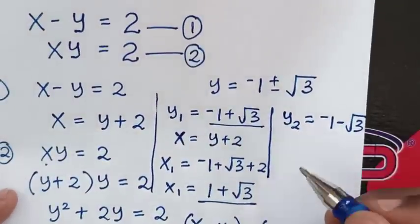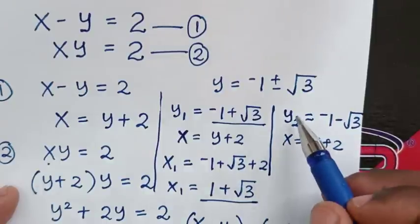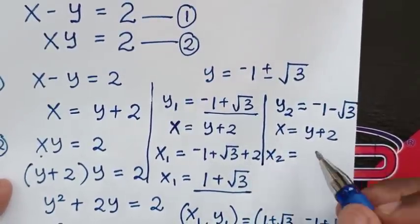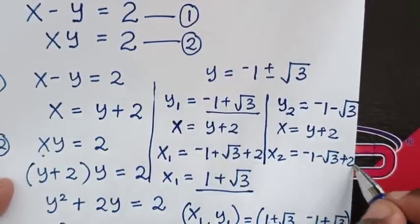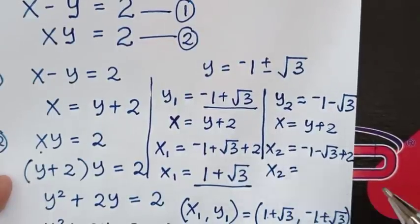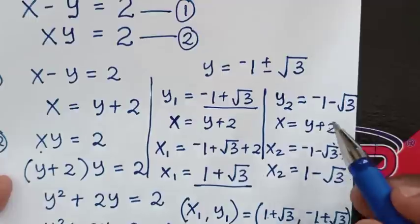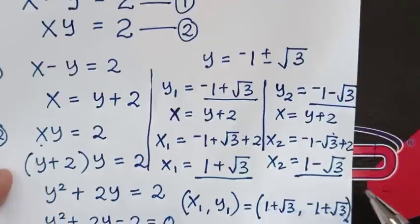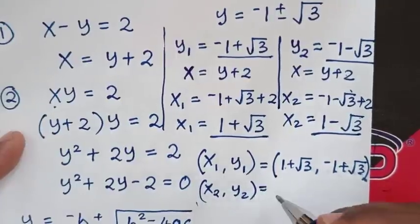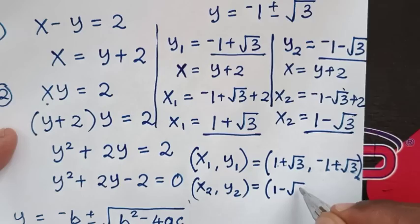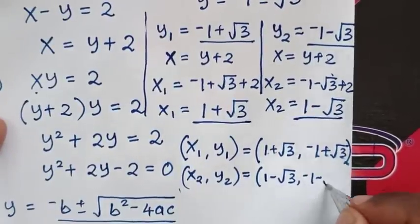For the second solution, x2 equals y2 plus 2, which is negative 1 minus square root of 3, plus 2. So x2 equals 2 minus 1, which is 1, minus square root of 3. The conclusion: x2 comma y2 is equal to 1 minus square root of 3, comma negative 1 minus square root of 3.